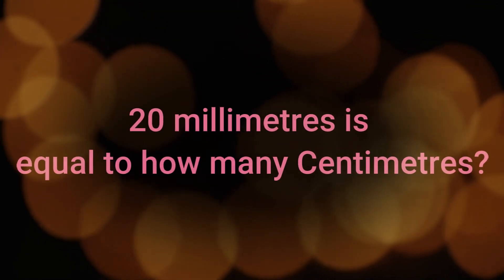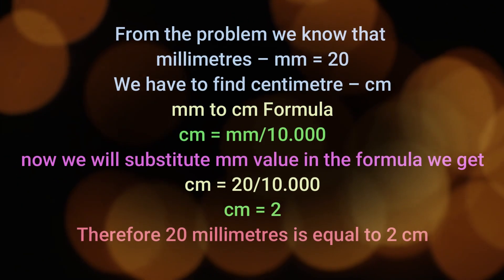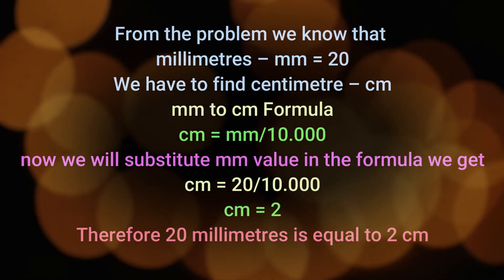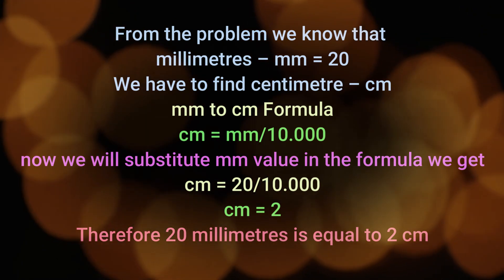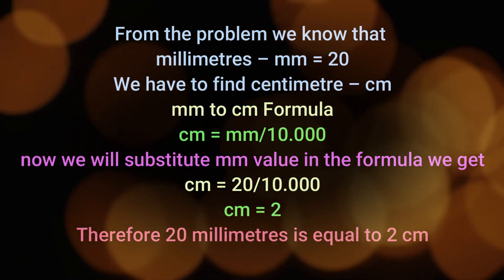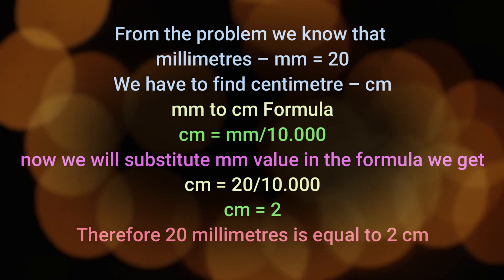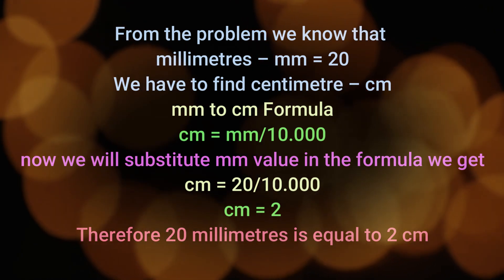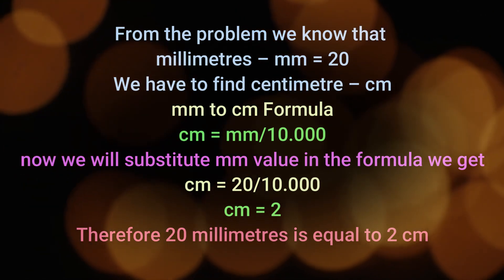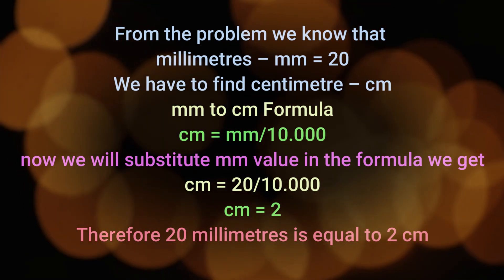Example 1: 20 millimeters is equal to how many centimeters? From the problem, we know that mm = 20. Here we have to find centimeters. Using the mm to cm formula: cm = mm / 10. Substituting the value, we get cm = 20 / 10. Therefore, cm = 2. So 20 millimeters is equal to 2 centimeters.